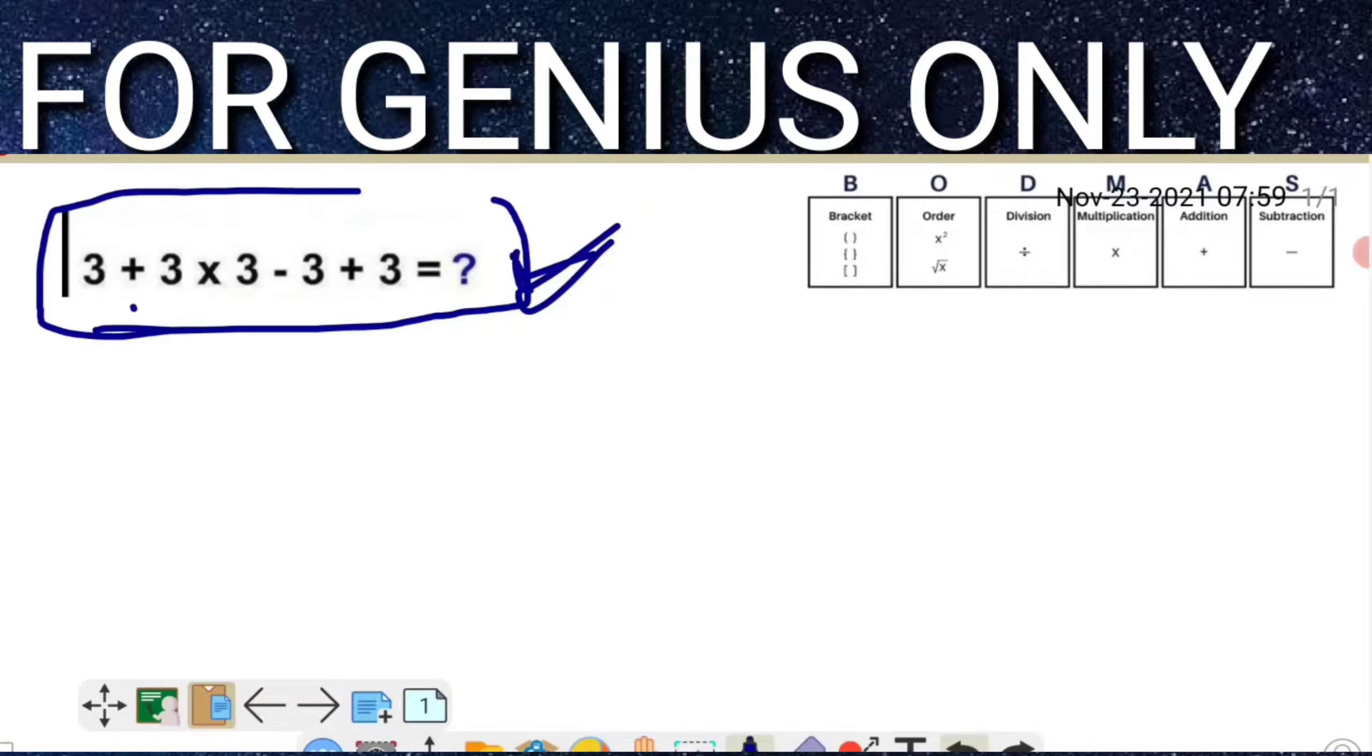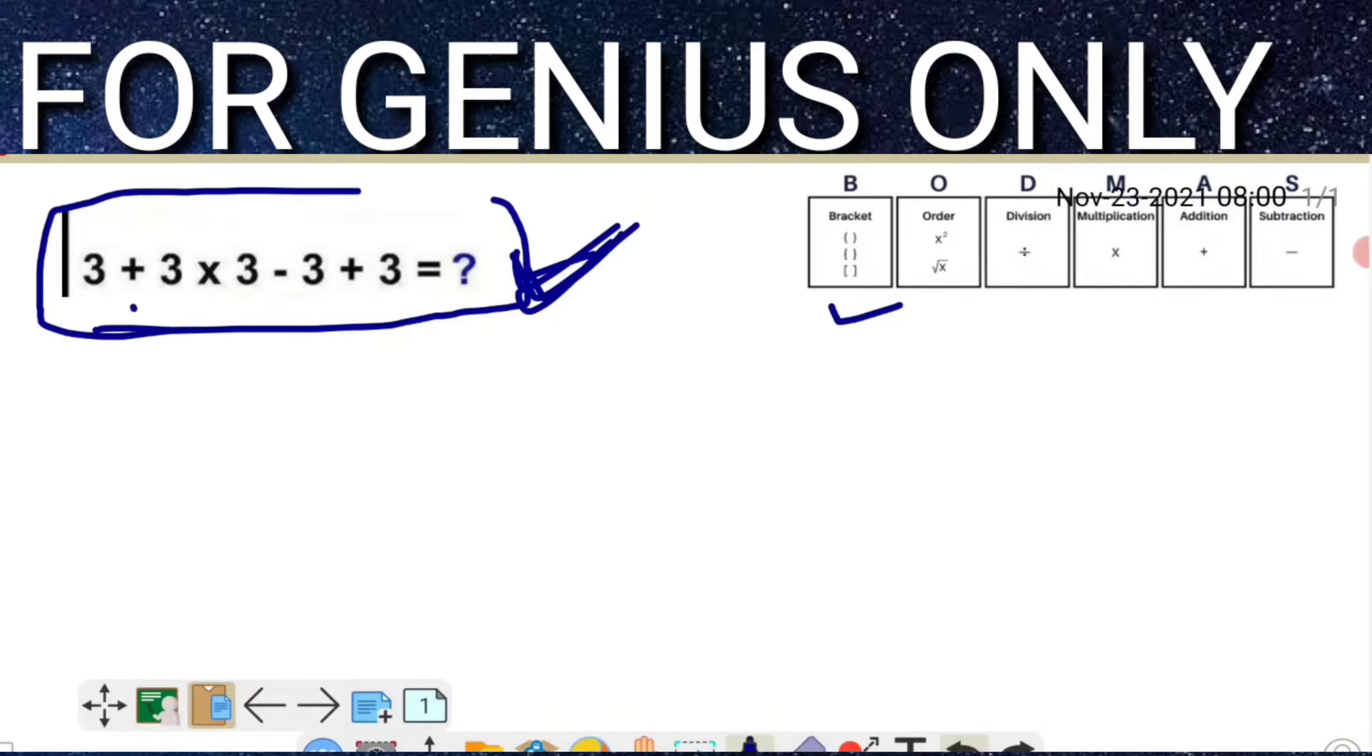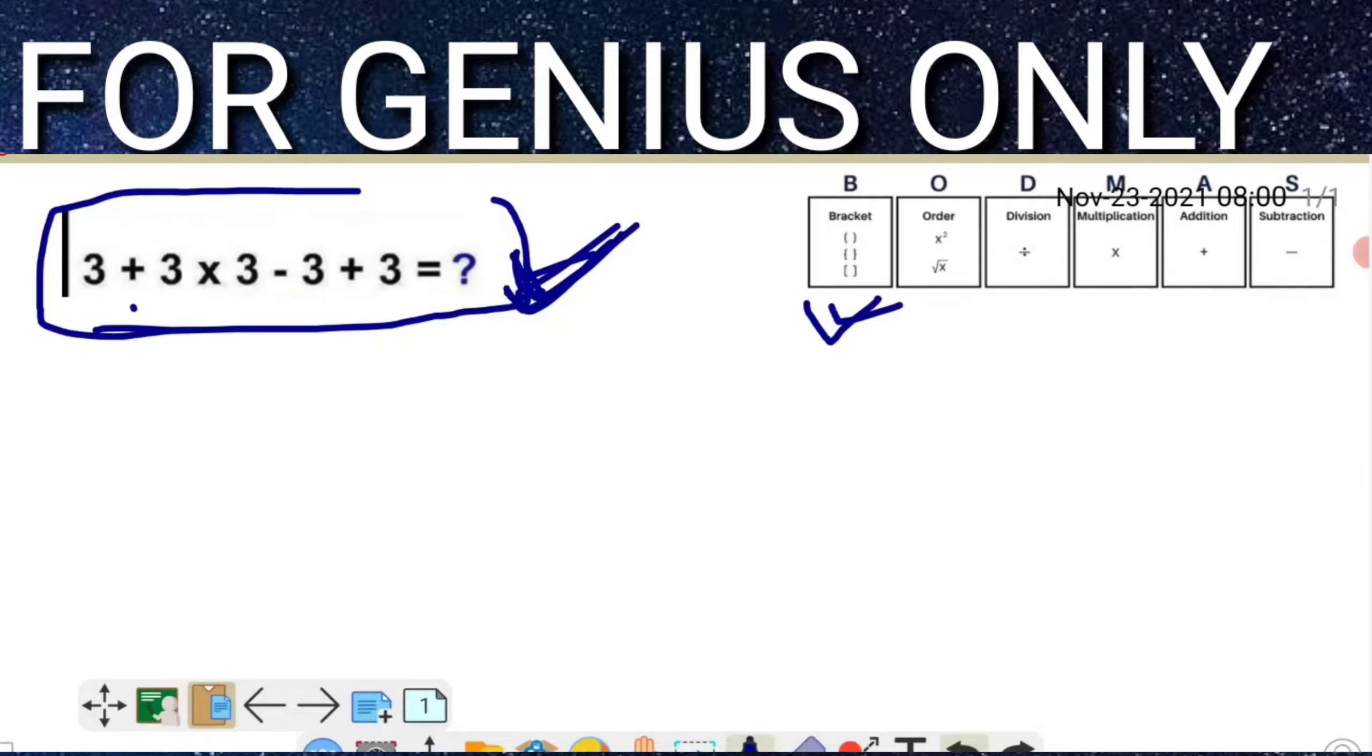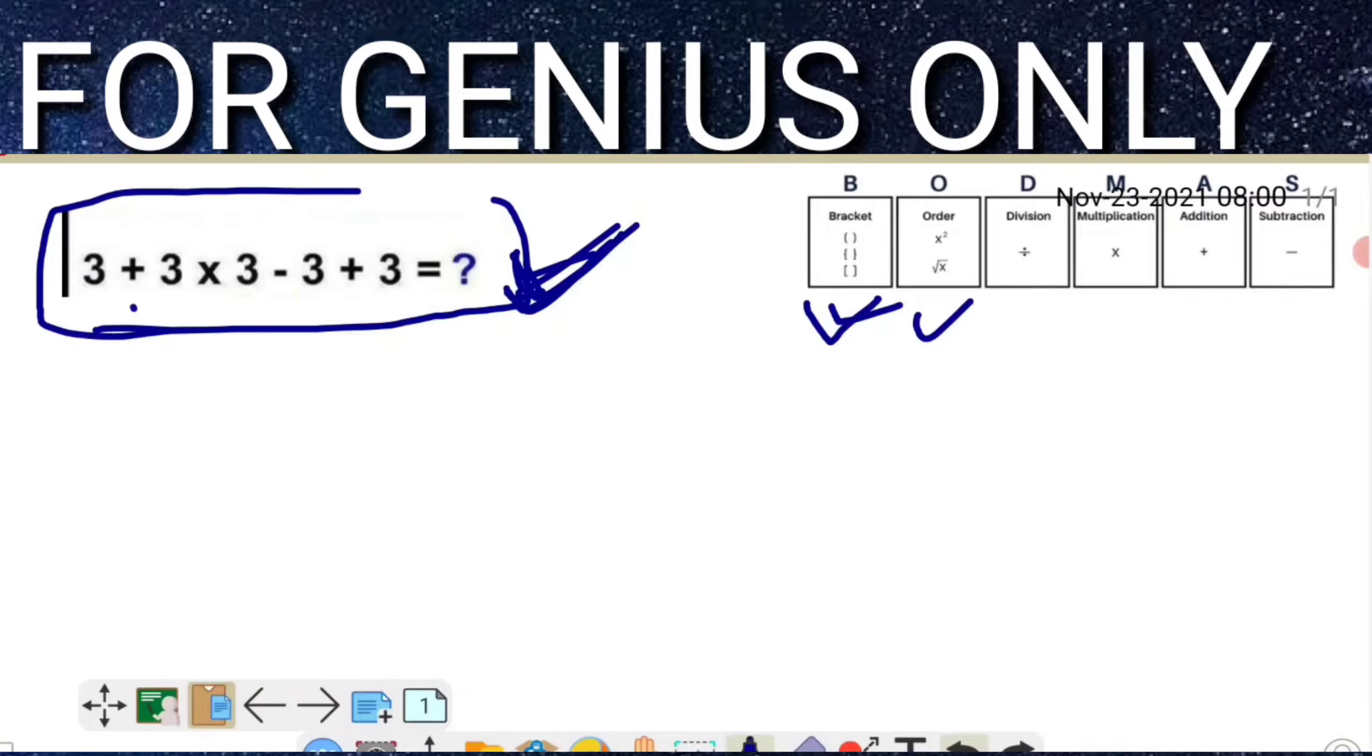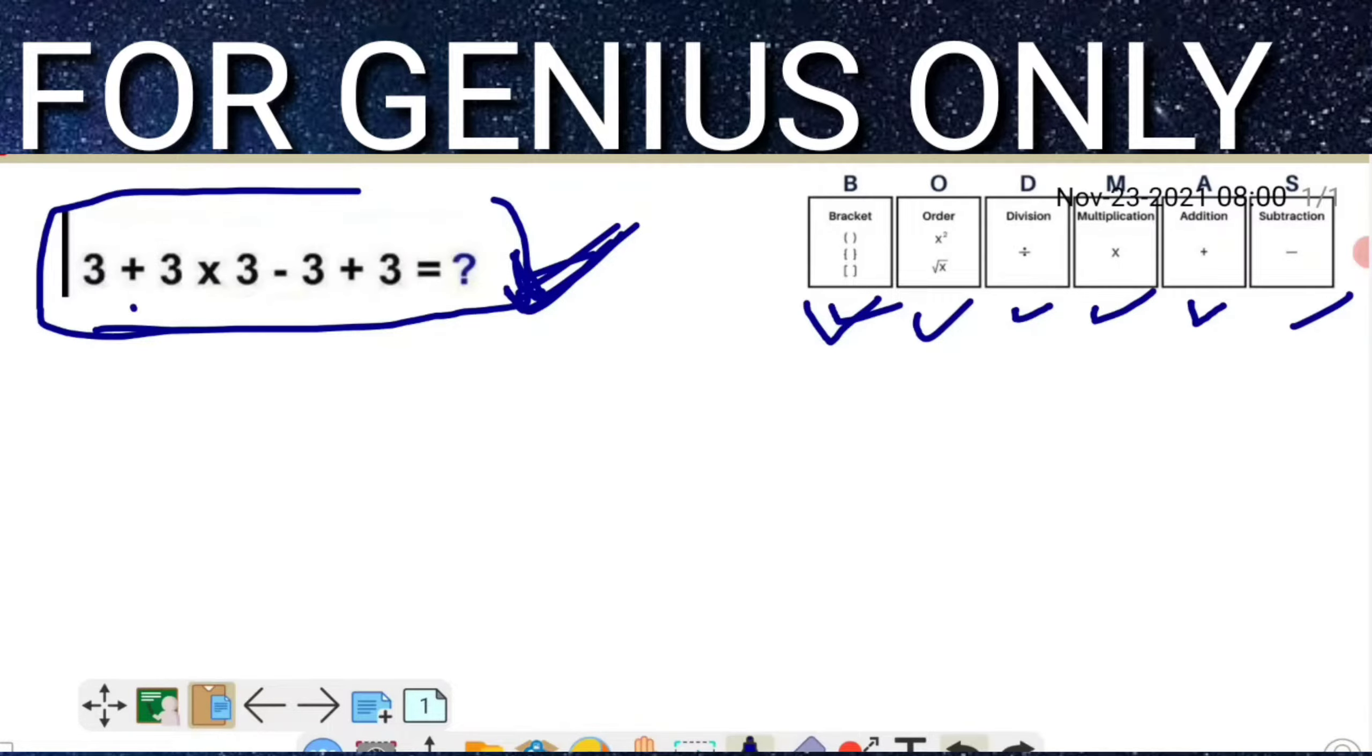If you have this type of equation, you have to follow one simple step: the BODMAS rule. BODMAS means if anything is available in brackets, first solve inside the bracket. After that, follow division, then multiplication, then addition, and last, subtraction.